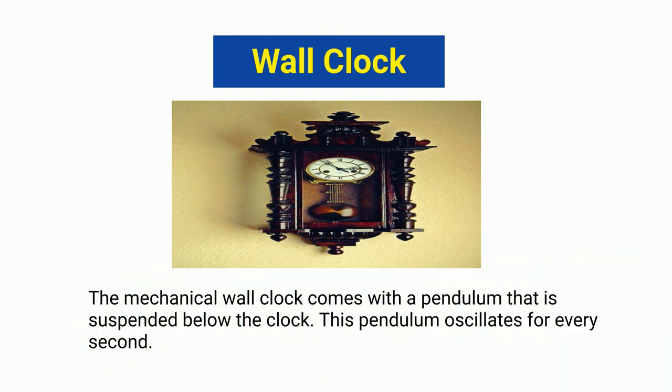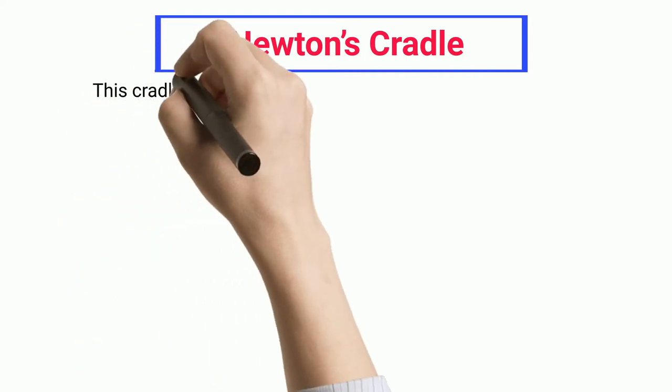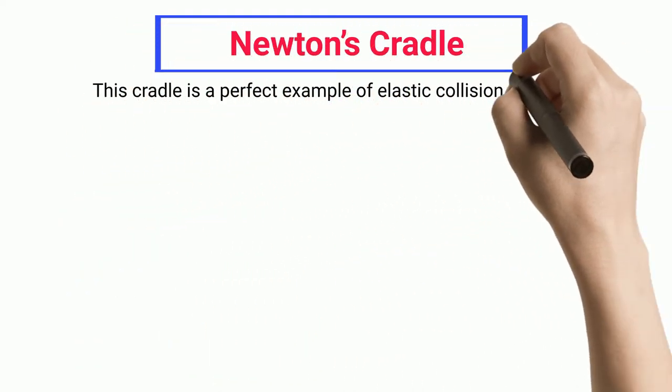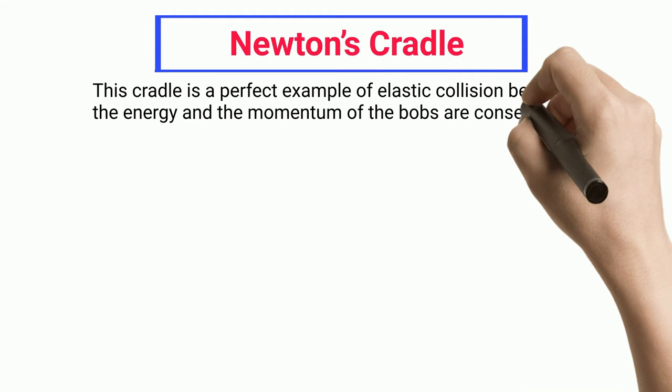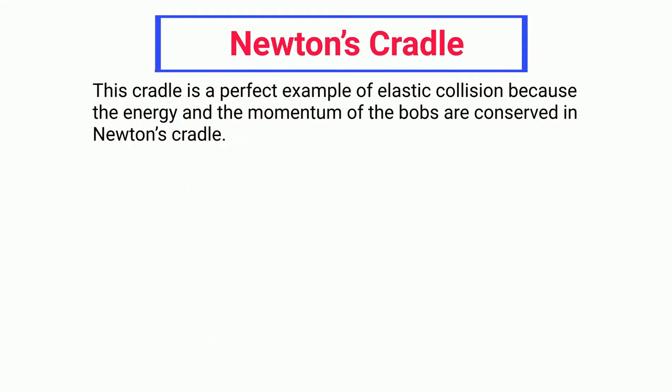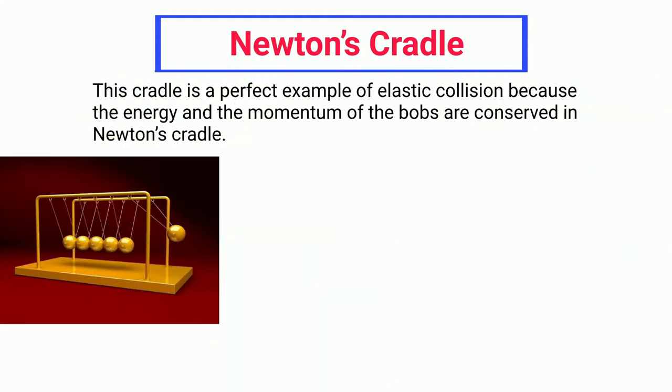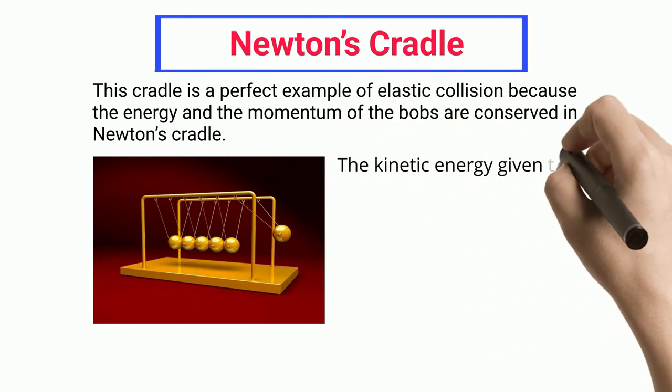Newton's Cradle: This pendulum oscillates for every second. This cradle is a perfect example of elastic collision because the energy and the momentum of the bobs are conserved in Newton's cradle.